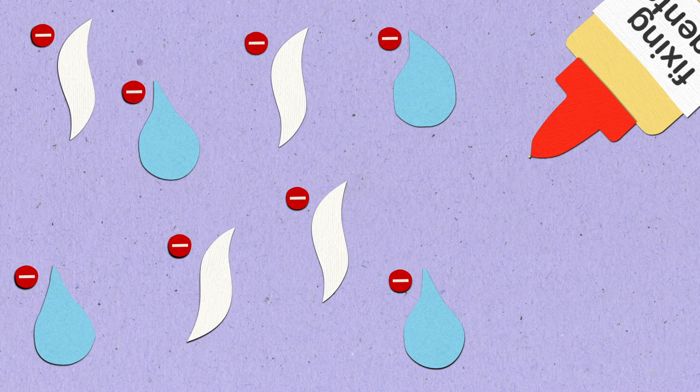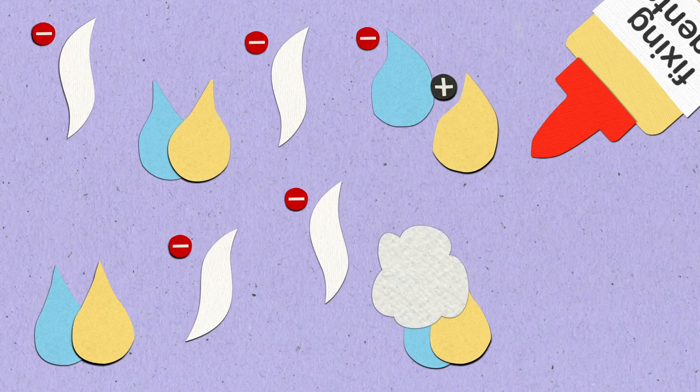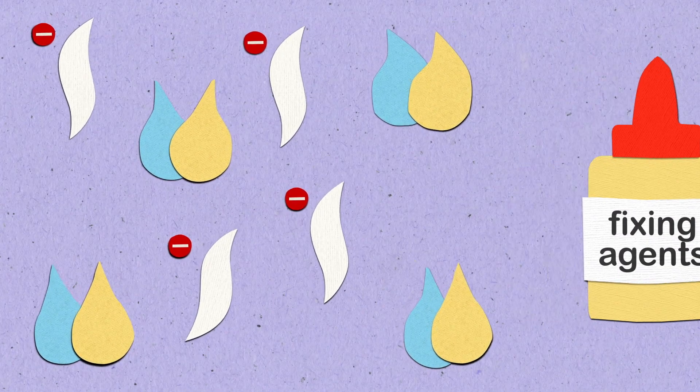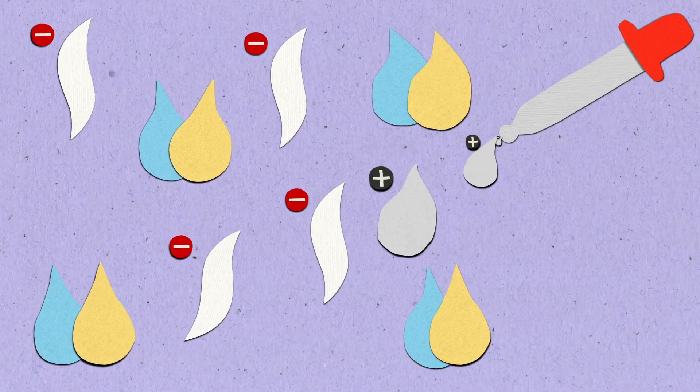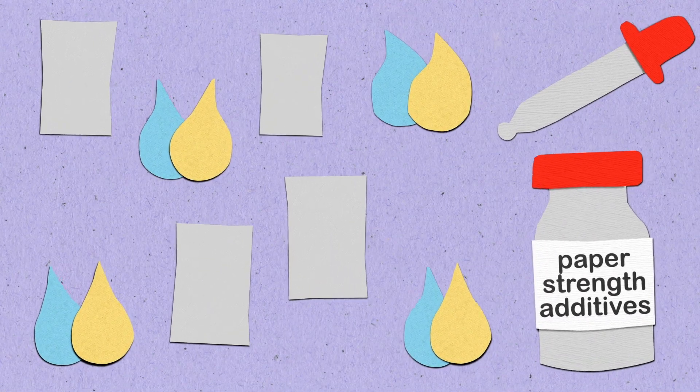In a charge balanced process, the charge in the water is neutralized with just the right amount of positive additives named fixing agents. This allows the fibers to be open to receive value adding agents such as paper strength additives.